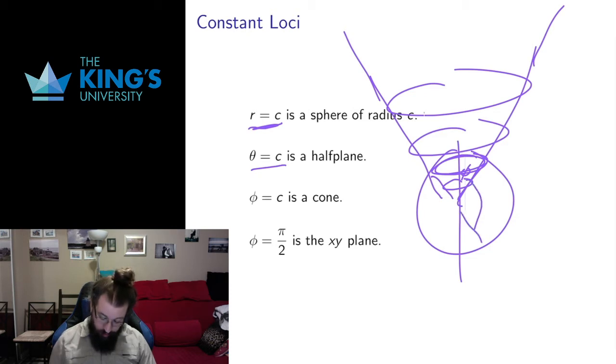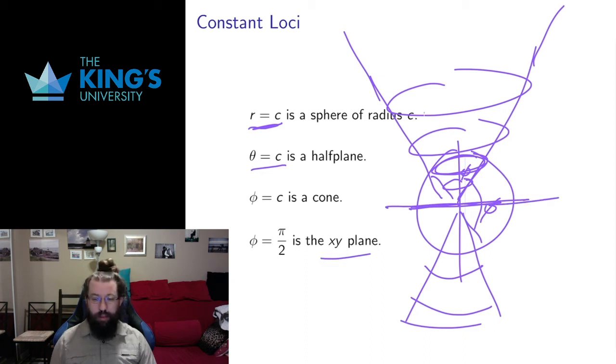And there's a special case if the latitude is exactly at pi over 2, then I don't get a cone, then I get exactly the xy plane. So that's the equator of any sphere of any radius. All those equators are going to be on the xy plane. So hopefully those constant loci, again, give you a sense of what this sort of looks like as a coordinate system.